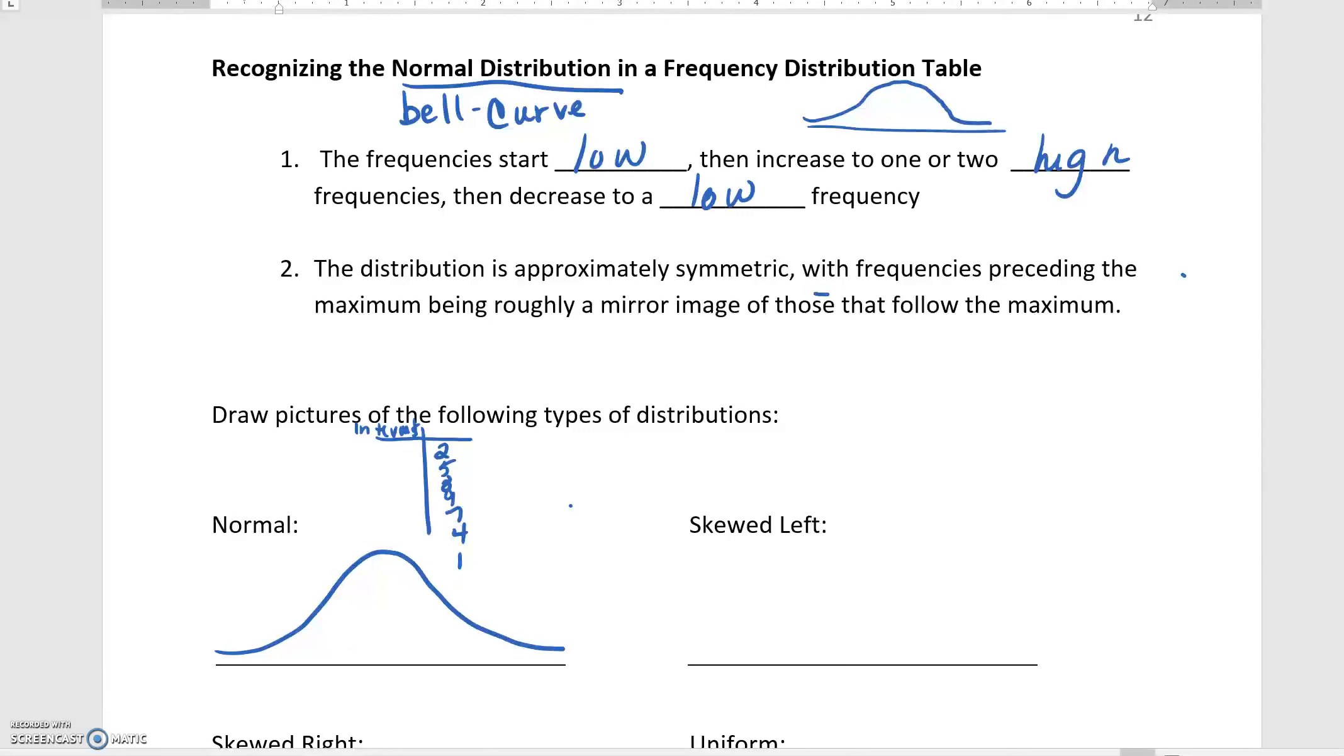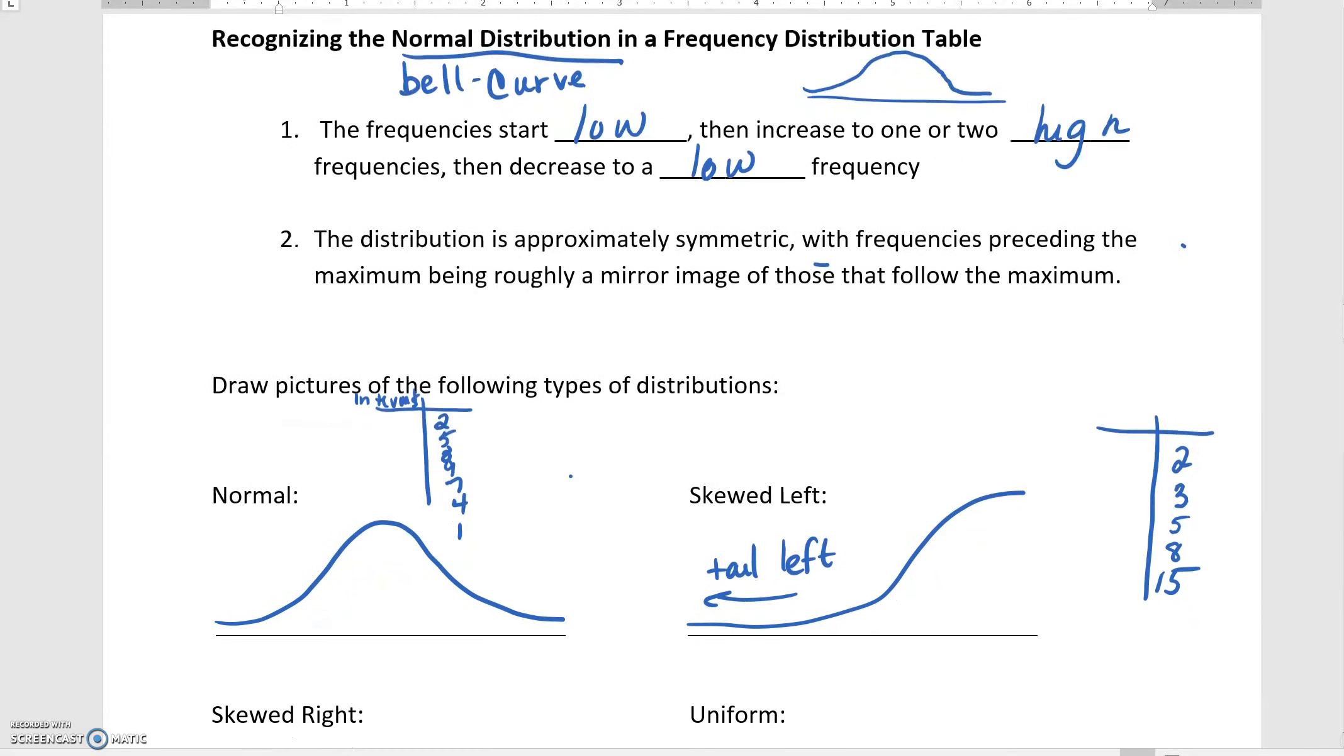So skewed left is when we start low and then go high. If we had a table, you'd have your intervals over here, whatever they are. You could start like two, three, five, and then get big. With skewed left and skewed right, notice that the tail is going to the left. We talk about which side the tail is on—the lower part.